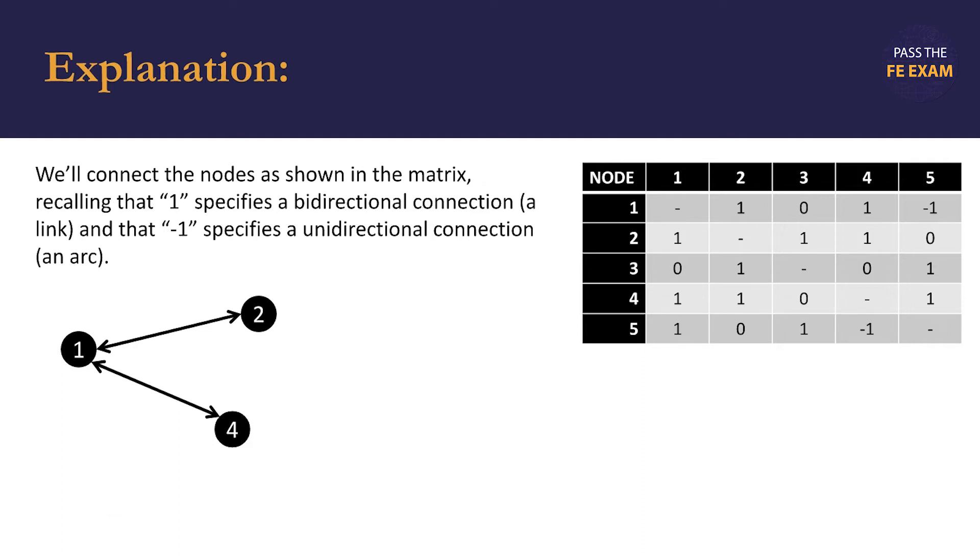There's also an arc from node number five. We see that this is an arc because the number one is negative in the column for node five. Therefore the connection, an arc, is unidirectional and originating from node five and going towards node one. So that's where we know where the arc originates from and where it terminates.